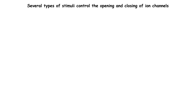What stimuli control the opening or closing of ion channels? One type of stimulus involves small molecules called ligands that bind to the ion channels — these are ligand-gated ion channels. When a ligand binds, it interacts with amino acids on the channel and causes a change in the 3D conformation of the protein, switching the channel from closed to open or vice versa. These ligand-gated ion channels are common in neurons: when neurons communicate, they release neurotransmitters, and some of these act as ligands, binding to channels on other neurons and changing their activity.